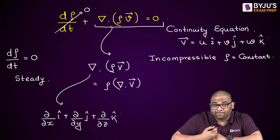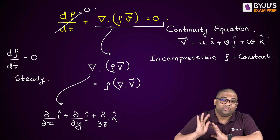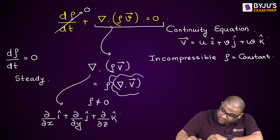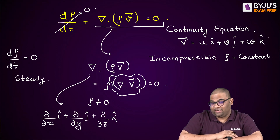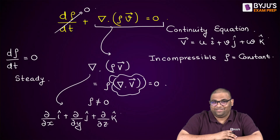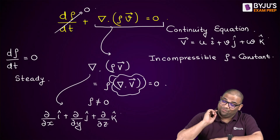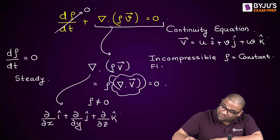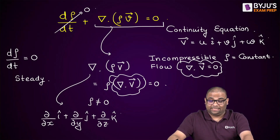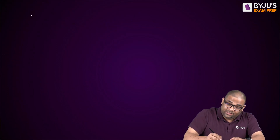The continuity equation has to be satisfied. Since rho is non-zero (it is constant), the term del dot V must be zero. That means the divergence of the velocity vector is zero. So for incompressible flow, the condition is: del operator dot velocity vector equals zero.